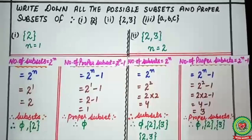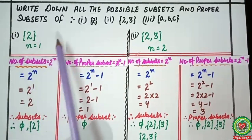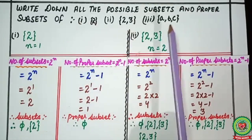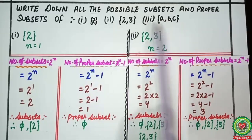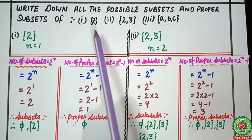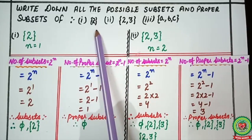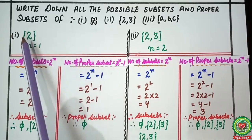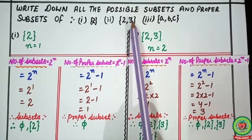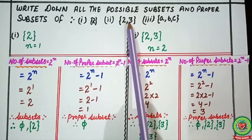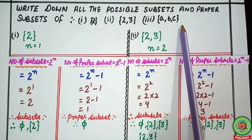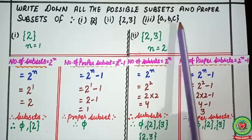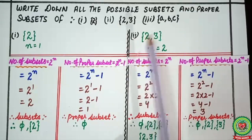Now students, we will learn how to find all possible subsets as well as proper subsets with a given set. The statement is: write down all possible subsets and proper subsets of these three given sets. The first set has only one element: {2}. The second has two elements: {2, 3}. The third set has three elements: {A, B, C}. We will solve them one by one.